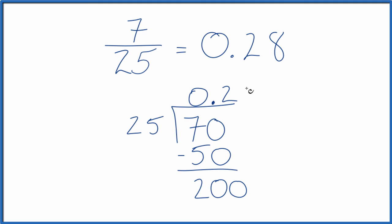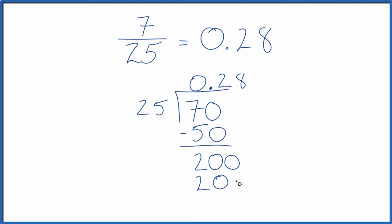And 8. 8 times 25, that's 200. We subtract, remainder is 0.